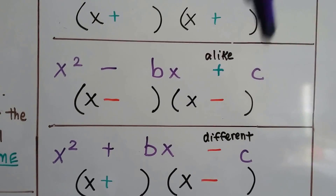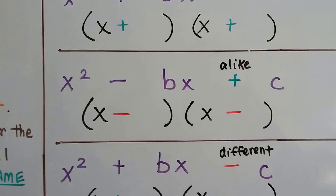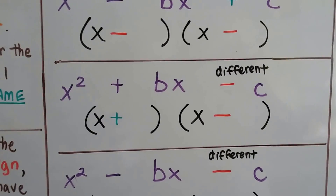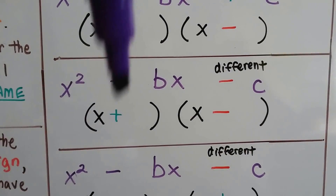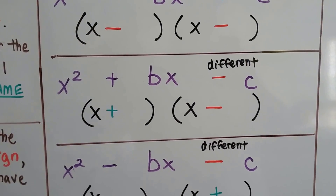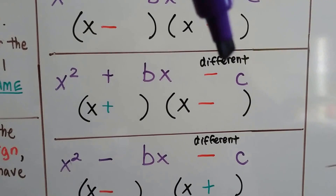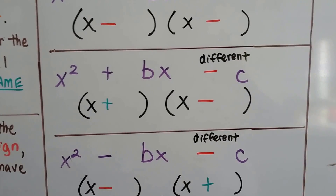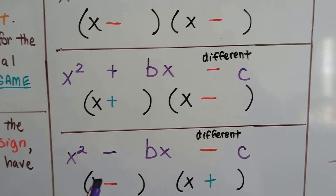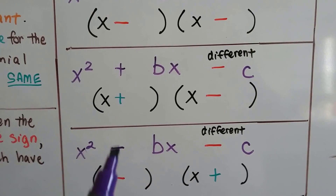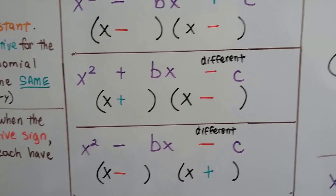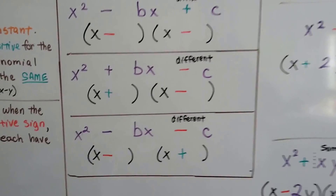This one's got a negative, so now they're both going to be different. And this one's got a negative and a negative — this one had a positive and a negative. This one's got a negative and a negative, and it says they're going to be different. So they might be different with a negative first, or they might be different with a positive first. It depends on what our factoring table tells us.